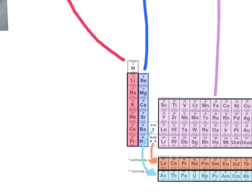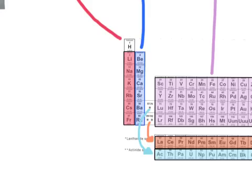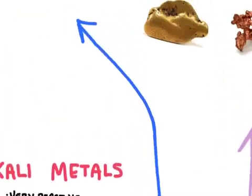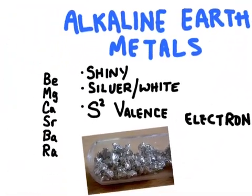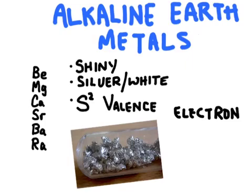Let's take a look at the alkaline earth metals — that's the column in blue. The alkaline earth metals are also going to be a solid at room temperature and they're fairly reactive, but less reactive than the alkali metals. They're going to be shiny, much harder than the alkali metals, a silvery-white color, and they're going to have two valence electrons. Here's a picture of calcium, and most of the alkaline earth metals are going to look very similar to calcium.